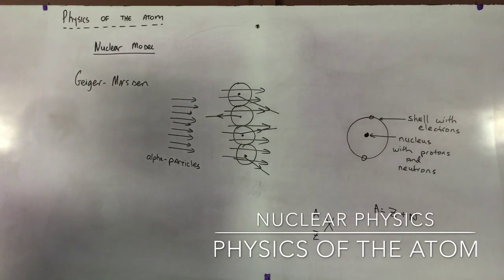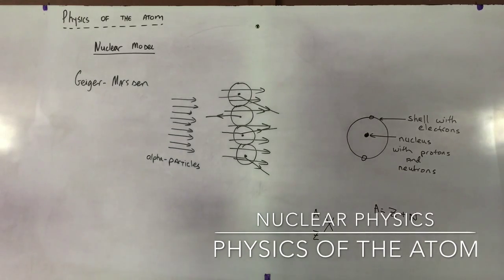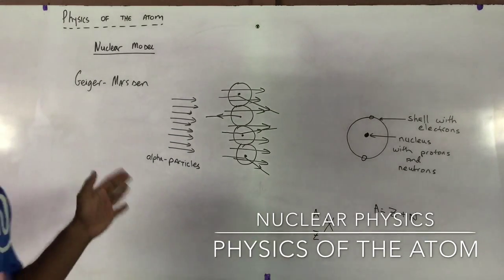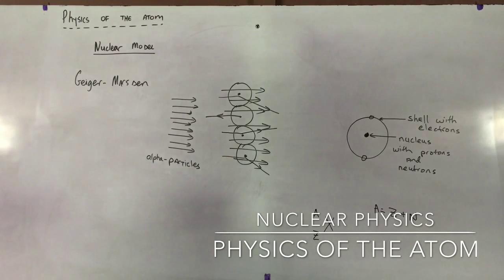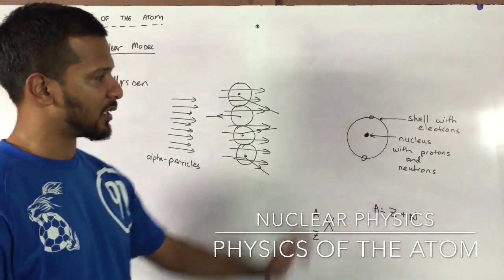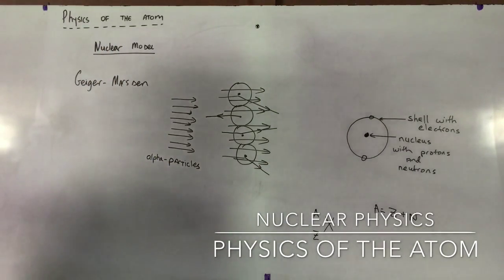When we take a look at the physics of the atom, we start on a nuclear model. There were many models before this, but we focus our attention on this model, which is what we are familiar with now. This model came about as a result of Geiger and Marsden's Gold Foil experiment.